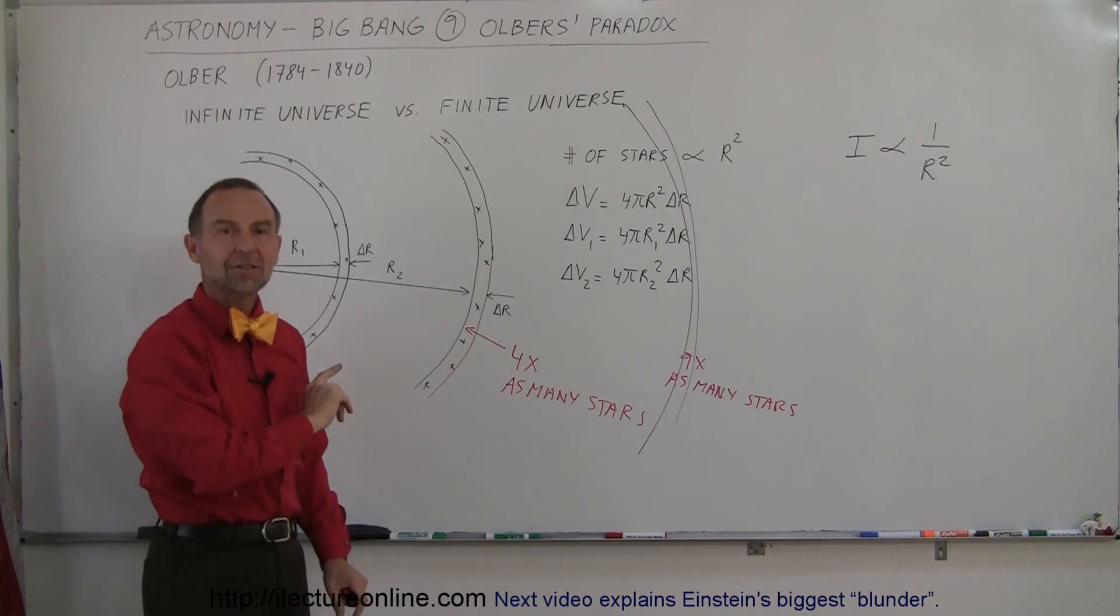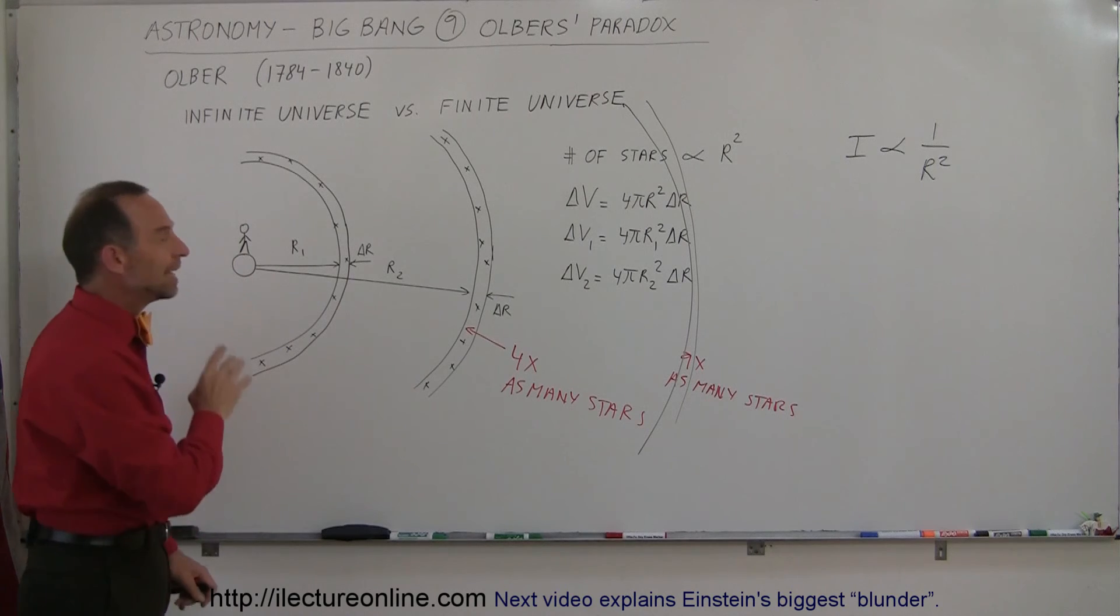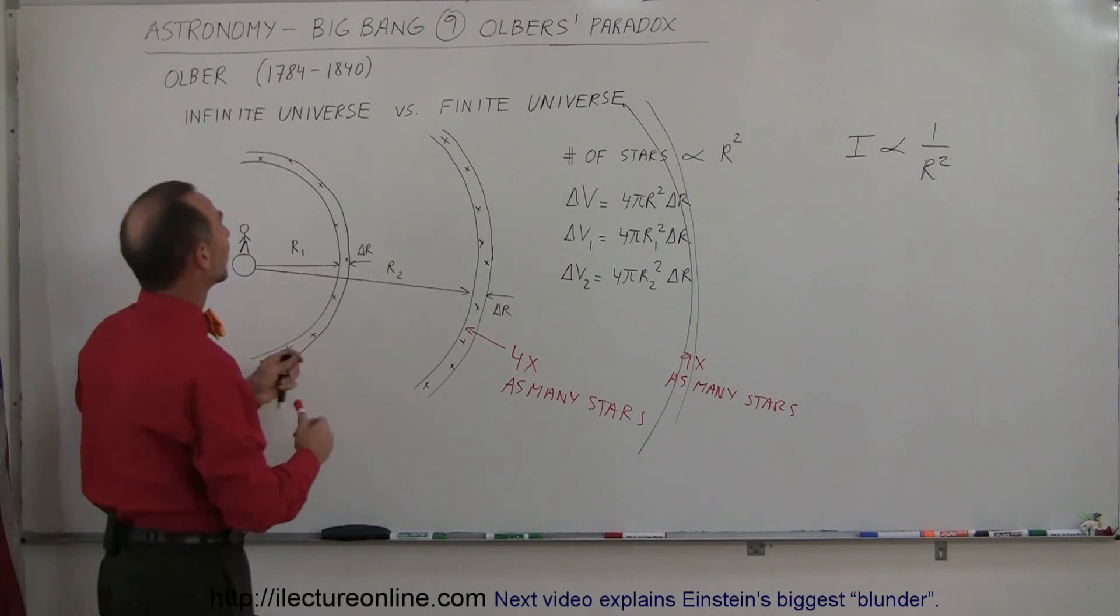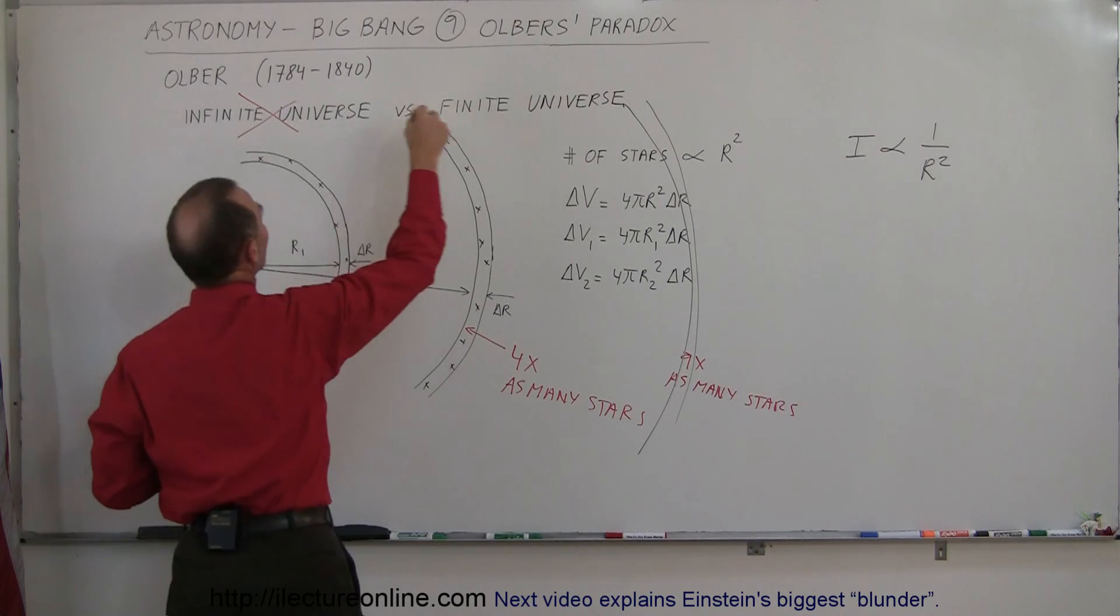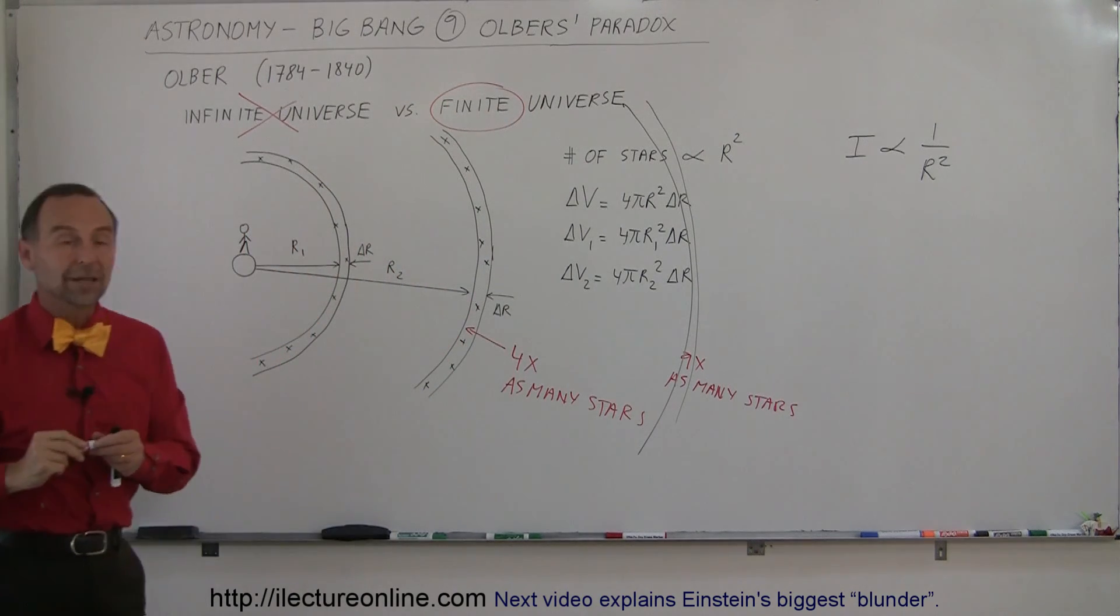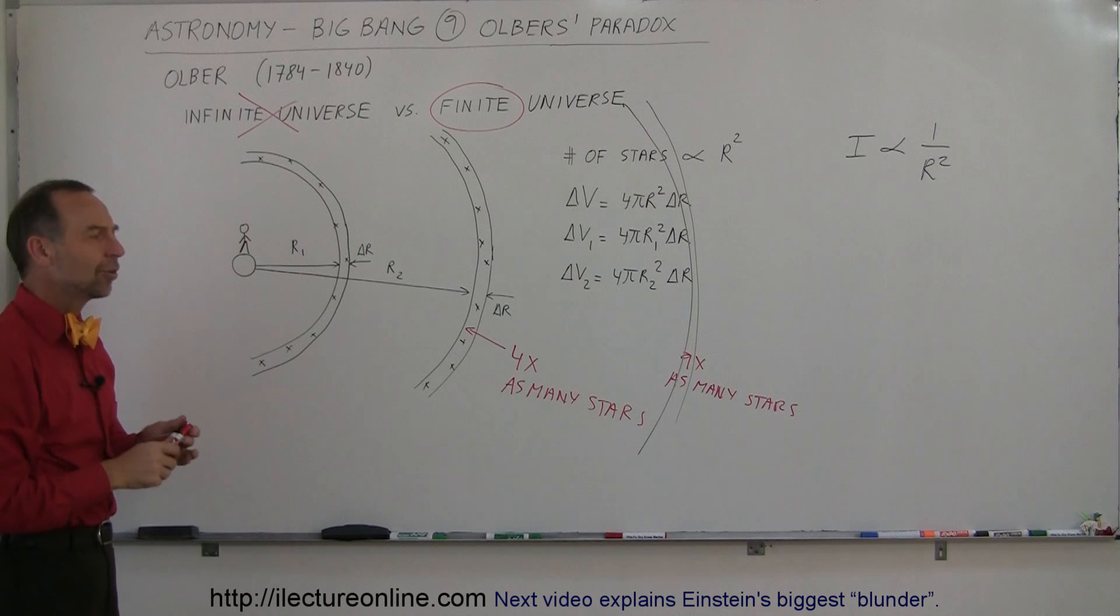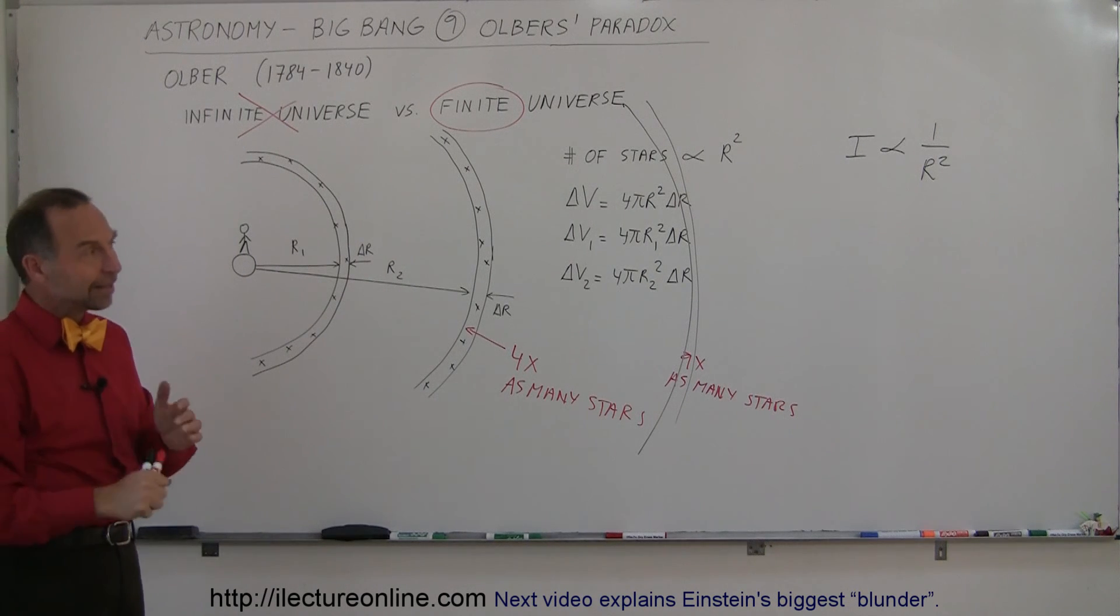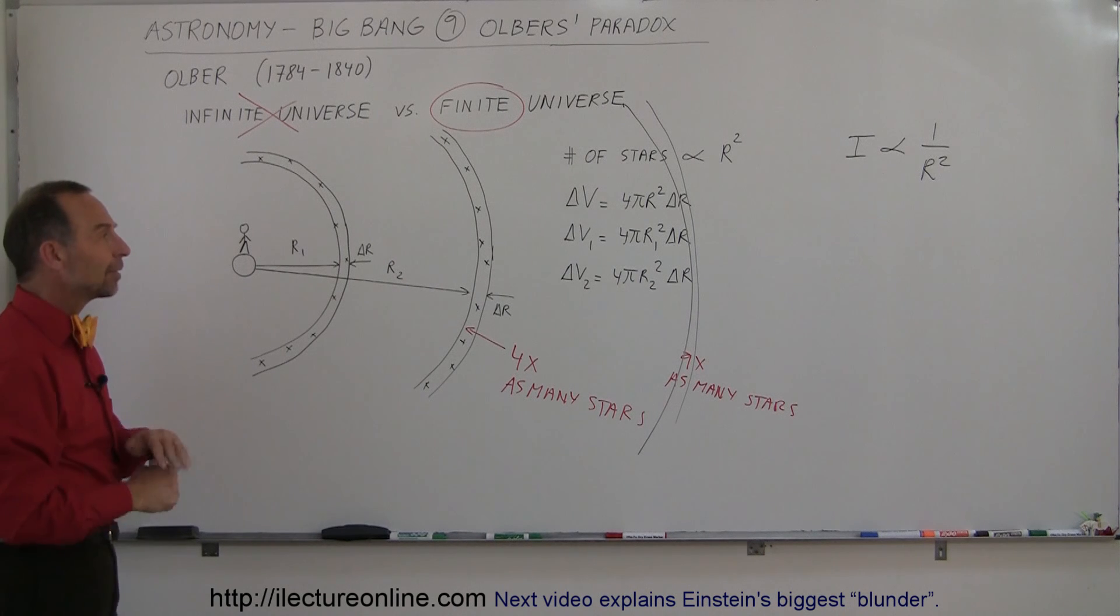Since that's not the case, Olber said the universe is not infinite. The universe is finite, because otherwise the night sky would be bright as the day sky. And so that kind of settled it. People looked at that argument and said that's a pretty darn good argument. We can't really argue against that one. So therefore from then on they realized the universe was not infinite.